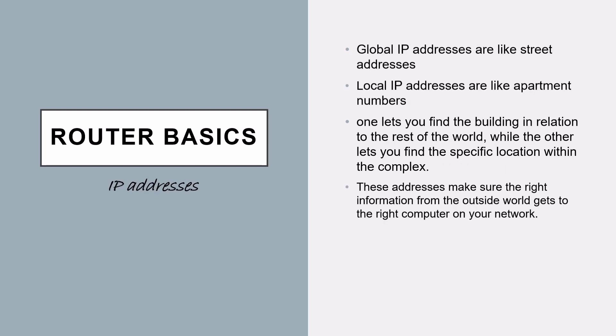What is the difference between global and local IP addresses? Global IP addresses are like street addresses while local IP addresses are like apartment numbers. The global IP address is larger in scope and is used by your modem, while the local IP address is the smaller one used by your cellphones and devices. One lets you find the building in relation to the rest of the world, while the other lets you find the specific location within the complex. This ensures the right information from the outside world gets to the right computer on your network.